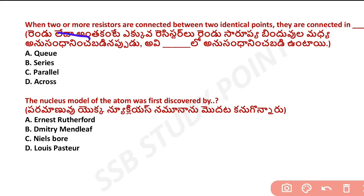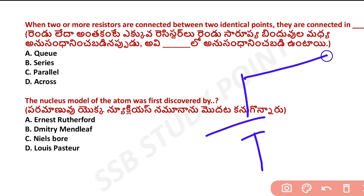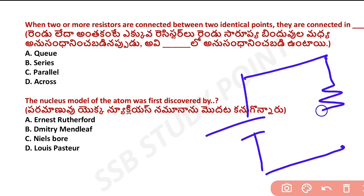Next question: when two or more resistors are connected between two identical points, they are connected in what configuration? This was covered in previous classes. When resistors are connected between two identical points, this is a parallel connection.